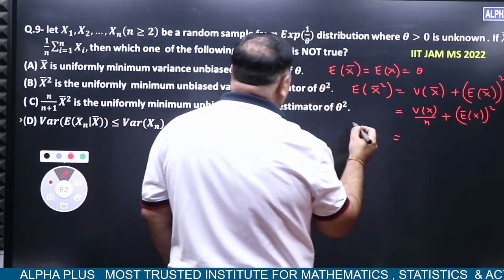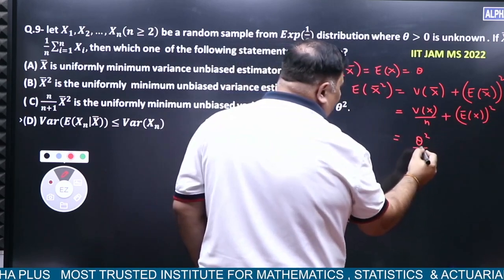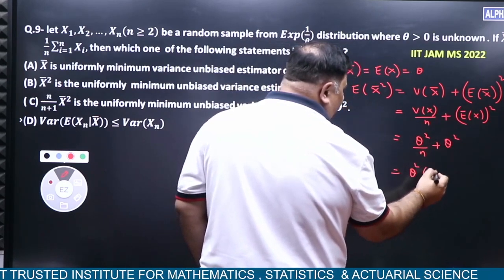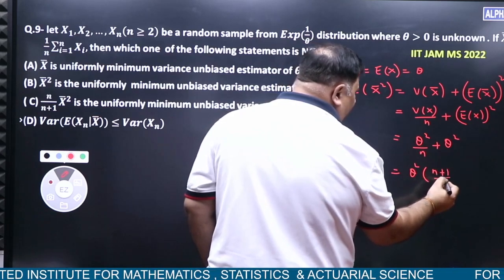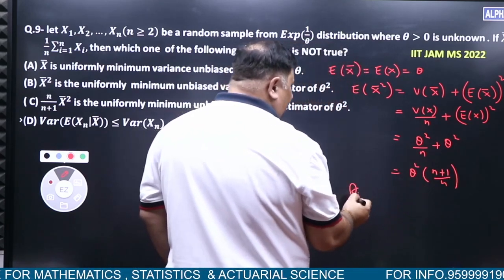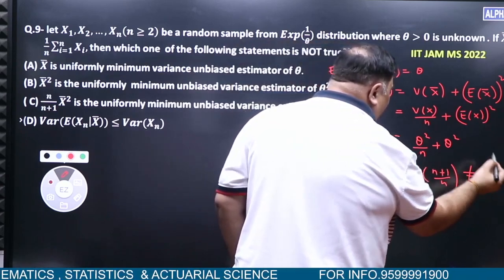What is variance of X? Theta square. So theta square by n plus theta square. When I write back X bar, then n plus 1 by n into theta square. Limit N tends to infinity, theta square is not equal to theta square.